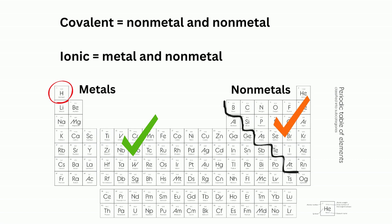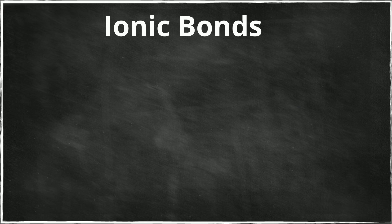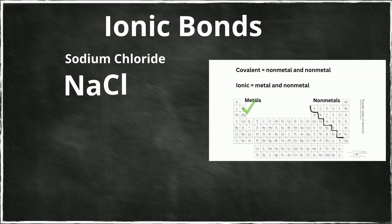So you can look at the chemical formula and see if you have a combination of metals and nonmetals. Let's look at some examples of ionic bonds. Sodium chloride, NaCl, is made of sodium, which is a metal, and chlorine, which is a nonmetal.